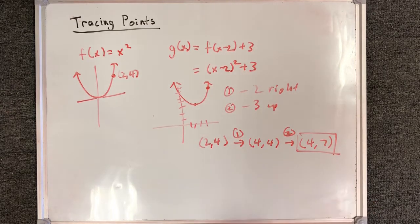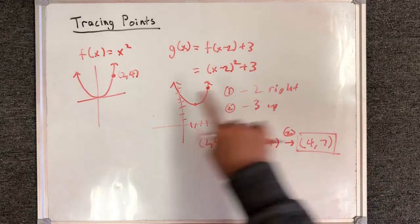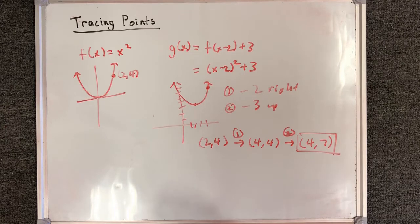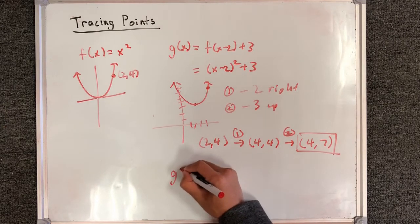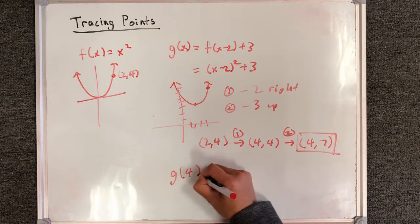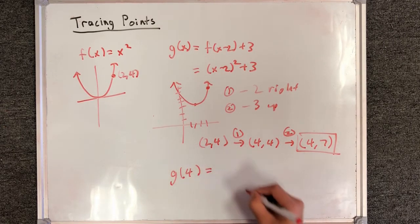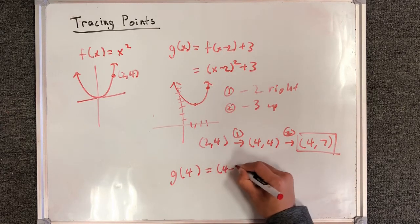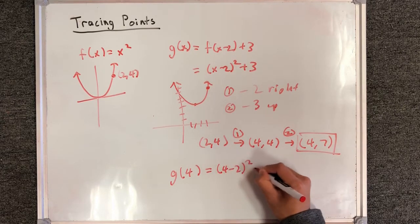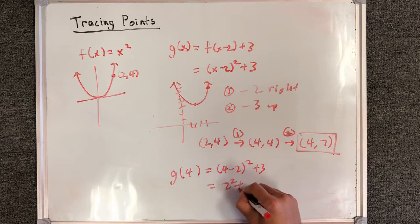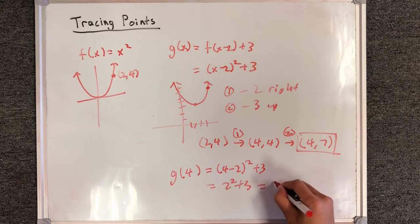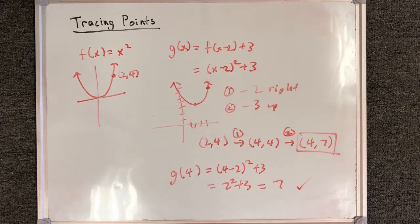We can double check that this is correct by plugging it back into g of x. So g of 4 should be equal to 4 minus 2 squared plus 3. This is 2 squared plus 3, which is indeed 7. And this verifies that our trace point was correct.